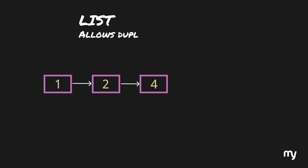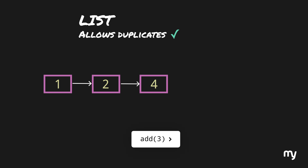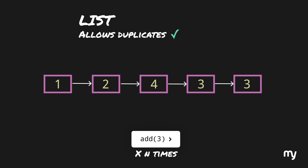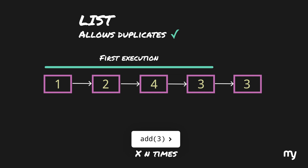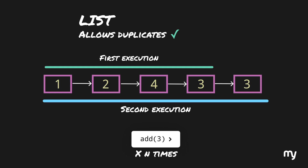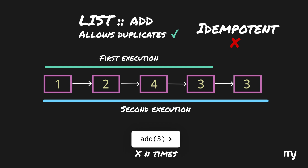Now let's take the example of a list with values 1, 2, and 4. A list doesn't care about duplicates, so if we add the number 3 and then repeat this operation, the number is added again to the list. If we repeat the same operation n times, the list will change every time. The result after the first execution and every subsequent execution is different. So the add method of list is not idempotent. You can apply this concept to any function to figure out whether it is idempotent or not.